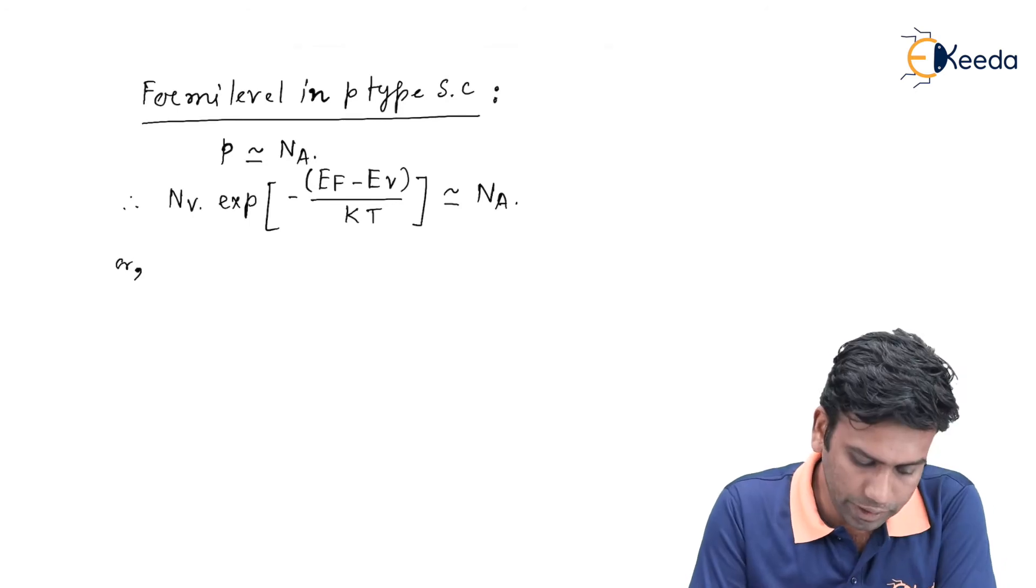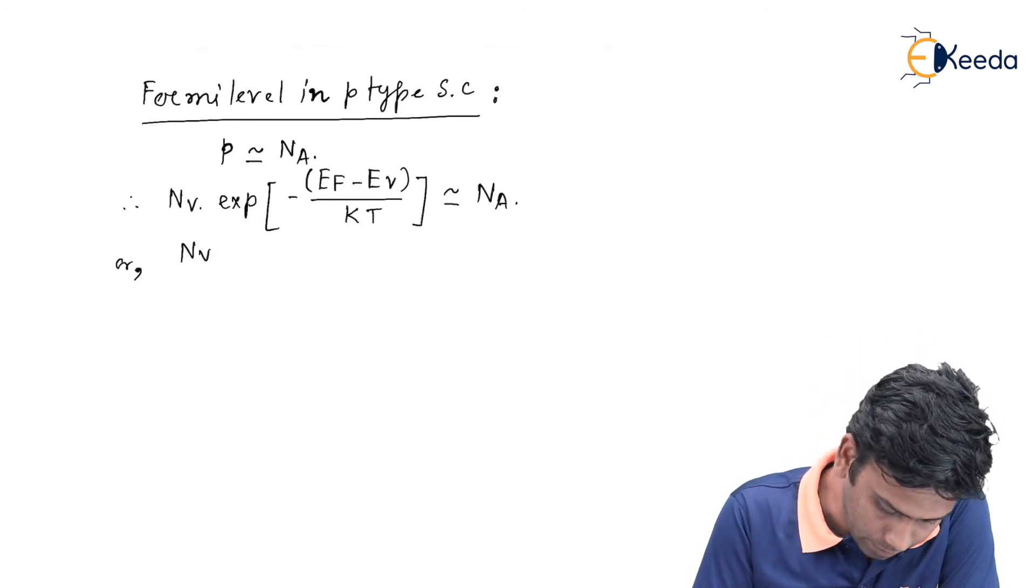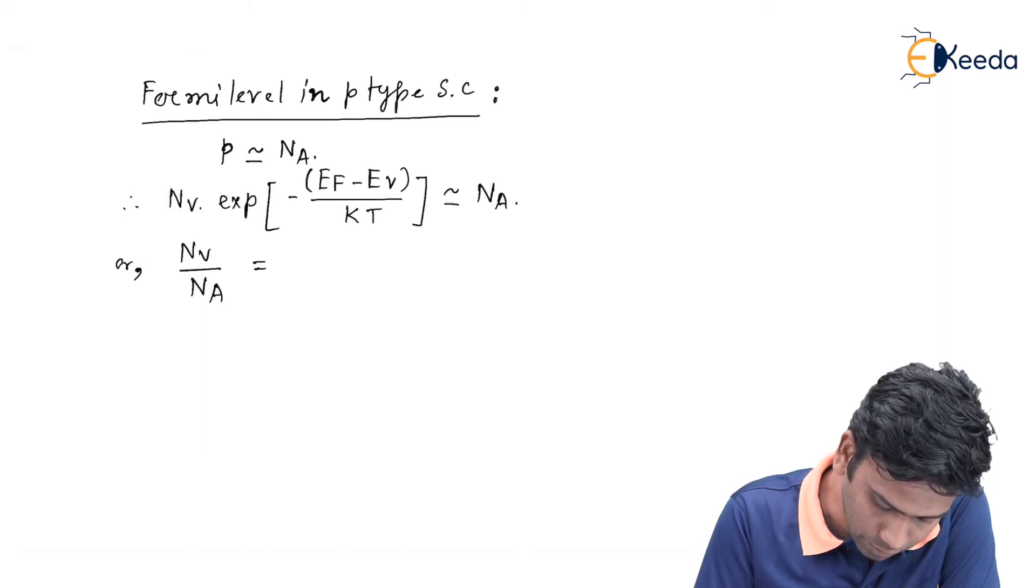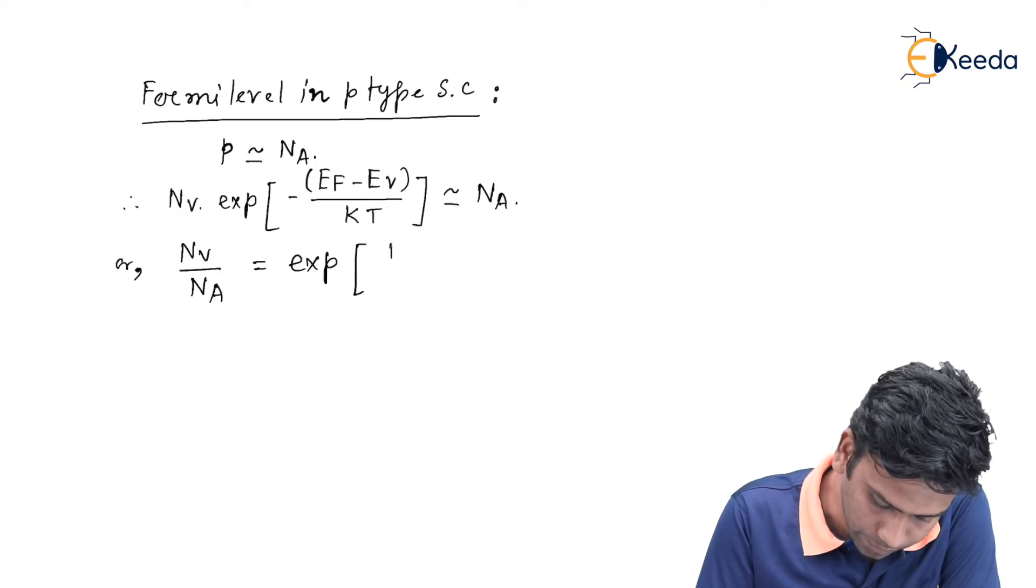From this equation we can write Nv by Na is equals to exponential, the minus sign will be positive, EF minus EV divided by KT.